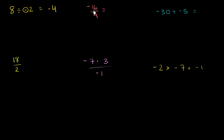Now negative 16 divided by positive 4 — I have to be very careful here. If I just had positive 16 divided by positive 4, that would just be 4. But because exactly one of these two numbers is negative, I'm going to get a negative answer.